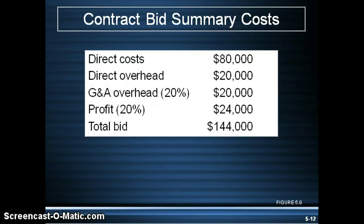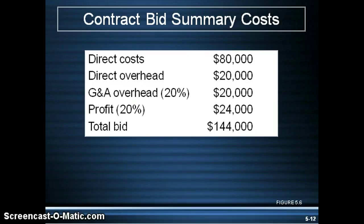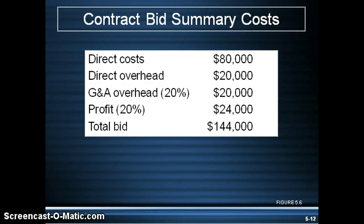Here's a great example of breaking down these costs. You've got your direct costs at $80,000 and direct overhead costs at $20,000. Then your general and administrative overhead costs are 20% of the direct costs and direct overhead costs combined. Direct costs and overhead costs total $100,000, so 20% of that would be $20,000. The profit is also shown, which is generally how contractors write it — they include the contingency, the G&A overhead, and then the profit so that everything is transparent to the customer. In this case the profit is 20% of $120,000, which is $24,000, making the total bid $144,000.